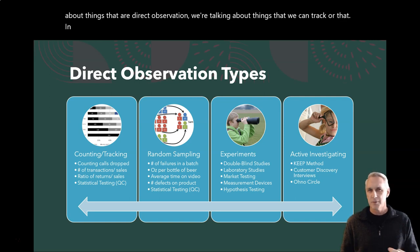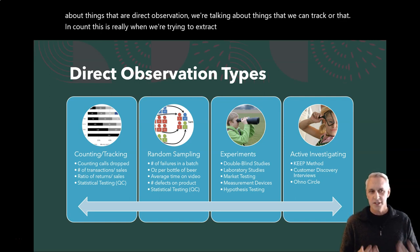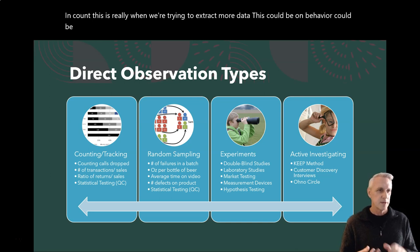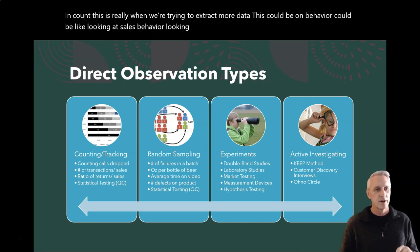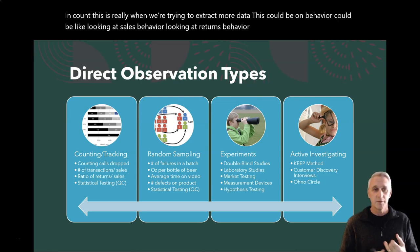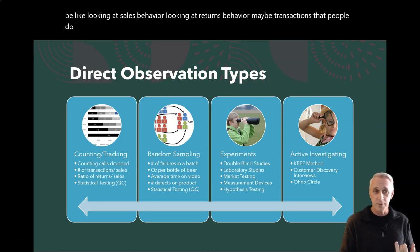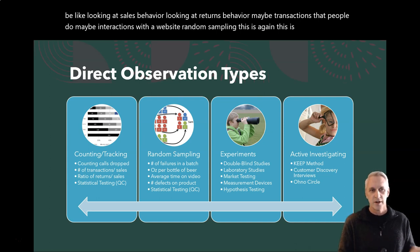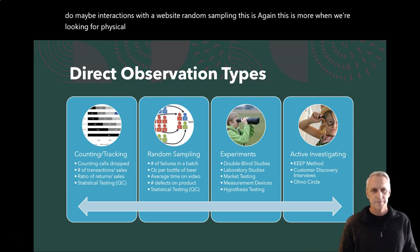This is really when we're trying to extract more data. This could be on behavior — like looking at sales behavior, looking at returns behavior, maybe transactions that people do, maybe interactions with a website, random sampling. This is more when we're looking for physical tracking of things.